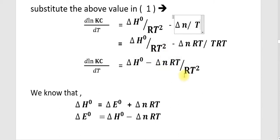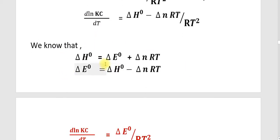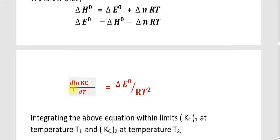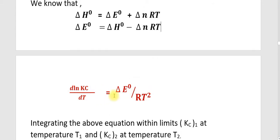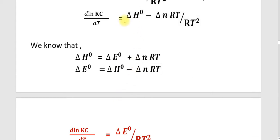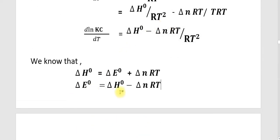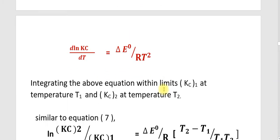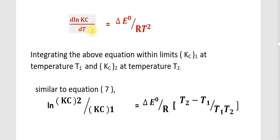We know that delta H° equals delta E° plus delta N·RT. Therefore, delta E° can be written as delta H° minus delta N·RT. Substituting this into the equation: d(Ln Kc)/dT equals delta H° minus delta N·RT, all divided by RT². Since delta E° equals delta H° minus delta N·RT, the equation simplifies to d(Ln Kc)/dT equals delta E° divided by RT².